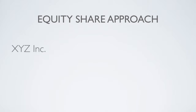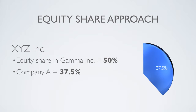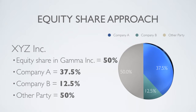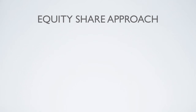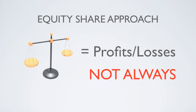Now, let's assume that XYZ has a subsidiary called Gamma Inc., in which it owns a 50% equity share. In this case, Company A would account for 37.5% of Gamma's emissions, and Company B would account for 12.5%. These numbers come from multiplying each company's percentage ownership in XYZ by XYZ's percentage ownership in Gamma. The other 50% of Gamma's emissions would be accounted for by the party that owns the remaining 50%.